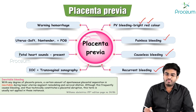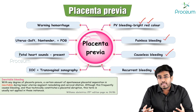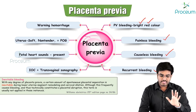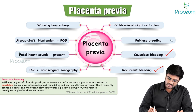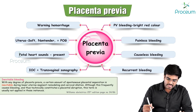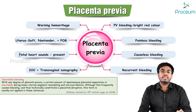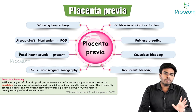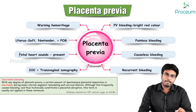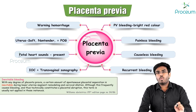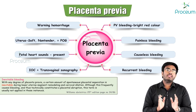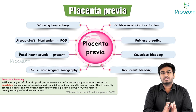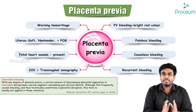The bleeding in placenta previa is recurrent bleeding. The bleeding is called inevitable or unavoidable bleeding because with any degree of placenta previa, some amount of spontaneous placental separation will always occur.